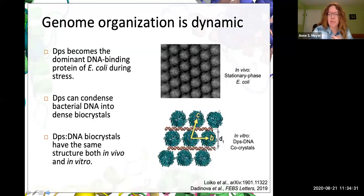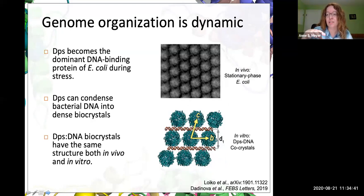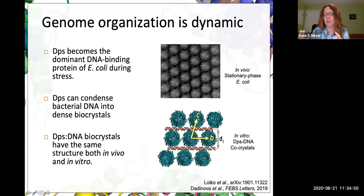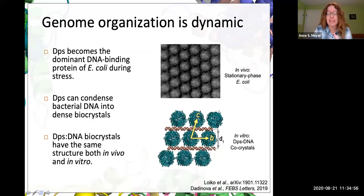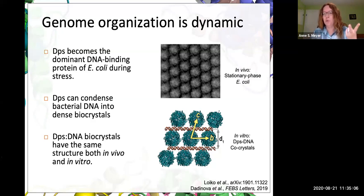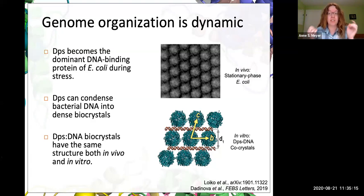What makes this a great system for biophysicists or biochemists is that these so-called bio-crystals — these DPS-DNA complexes — have the same structure, as far as we can tell, both in vivo and in vitro. People have done crystal structures in vitro of purified DPS with purified DNA, and the crystal packing, symmetry, and geometry of these complexes is exactly the same as what you see inside living cells. So this looks like a fantastic two-component system: essentially only DPS and DNA coming together to form this apparently crystalline structure inside living cells.